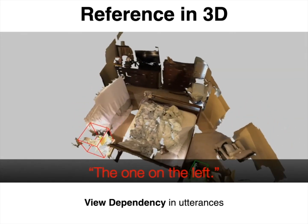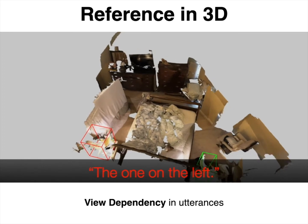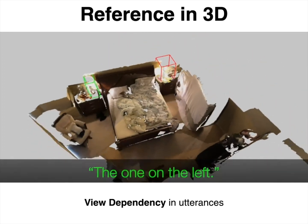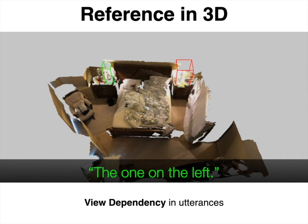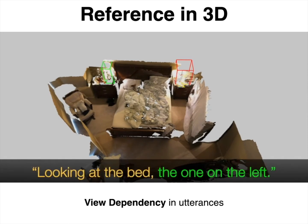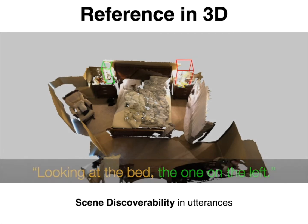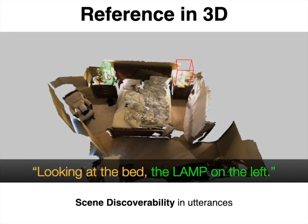Regarding view dependency, observe how a reference can change the indicated target according to the spectator's viewpoint. To make such an utterance uniquely refer to a target object, one needs to also describe the used viewpoint. Regarding scene discoverability, even if the utterance allows one to identify the target among the same class instances, it might not be sufficient to discover that target within the entire scene. An easy fix for this problem is to mention the target object class or a synonym of it.